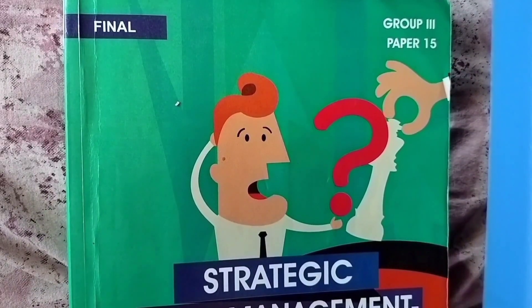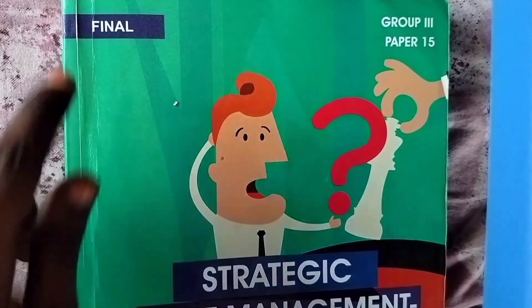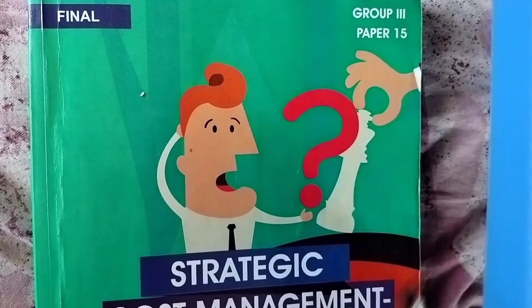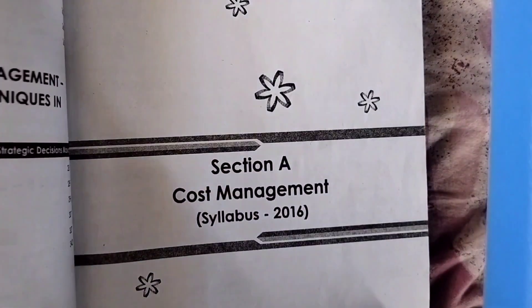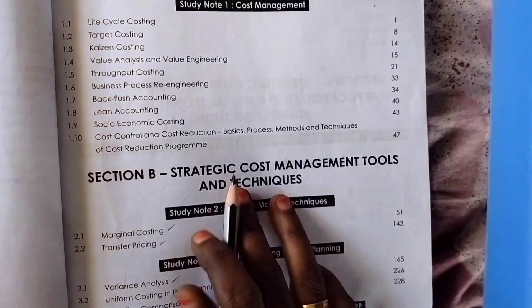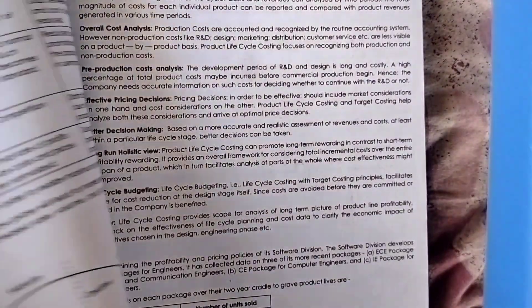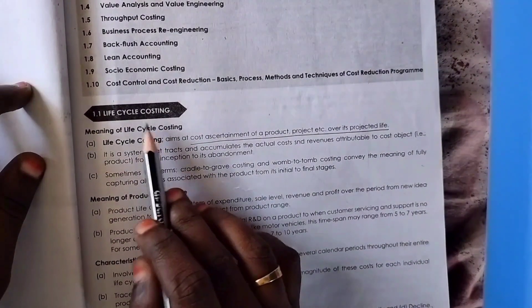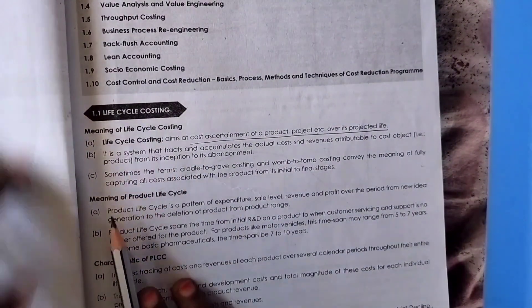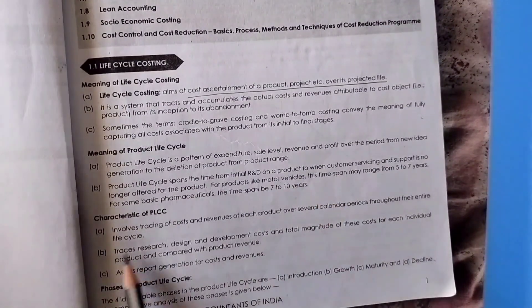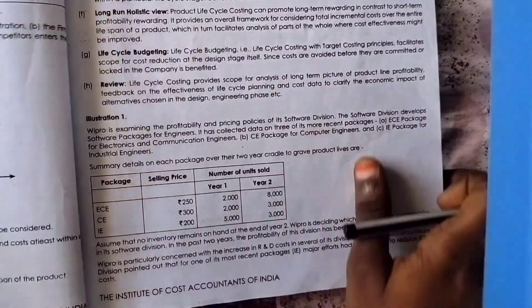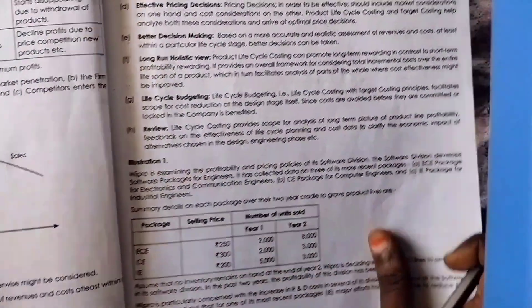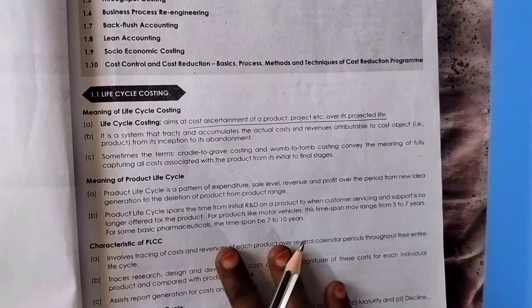Hi guys, hope all of you are well. Today we are going to learn about life cycle costing from CMA Final Group 3, Paper Number 15, Strategy Cost Management, Study Note 1 - Cost Management: Life Cycle Costing. We are going to learn about the meaning of life cycle costing, meaning of product life cycle, characteristics of life cycle costing, phases in product life cycle, and benefits, importance, and problems.